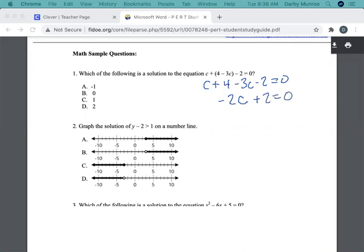And then I could divide everything by 2, or I could subtract 2 to the other side. So if I do that, I get minus 2C equals negative 2. And then if I divide both sides by negative 2 to get the C by itself, then C equals 1. So that is how you do the first one.